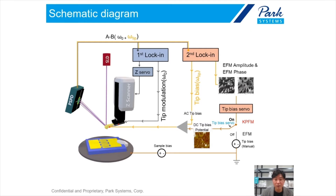When the servo is off, this is just EFM. In EFM, just AC tip bias is applied for electrical signal. But in KPFM, DC bias — AC bias with the DC bias — is applied to monitor the sample surface potential.